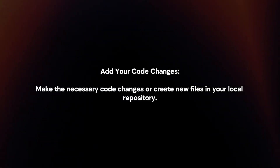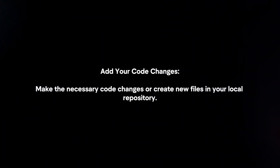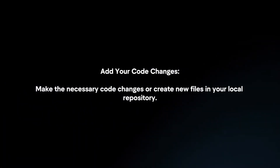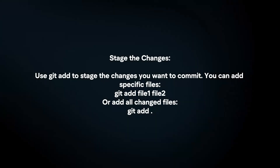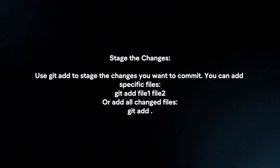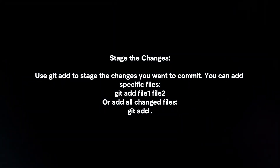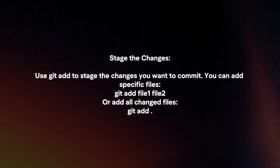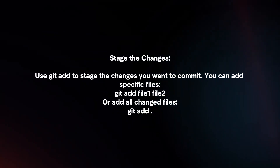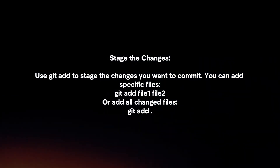Add your code changes. Make the necessary code changes or create new files in your local repository. Then stage the changes — use git add to stage the changes you want to commit. You can add specific files or add all changed files.